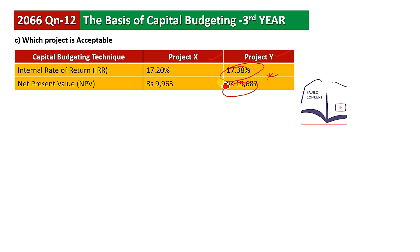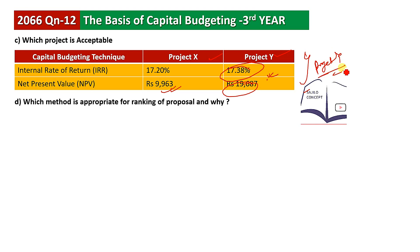The NPV of Project X is 9,163 and Project Y is 19,687. Based on both NPV and IRR, Project Y is the preferred choice. Regarding which method is appropriate for ranking investment proposals in capital budgeting: there are discounting and non-discounting methods, but NPV is superior to IRR. NPV supports the shareholder wealth maximization objective.